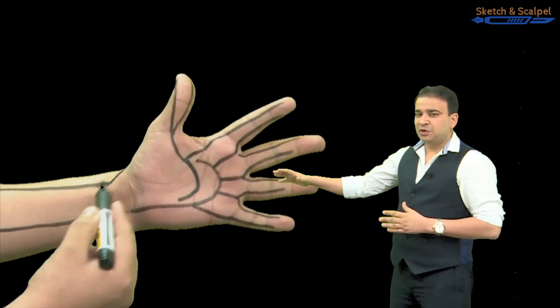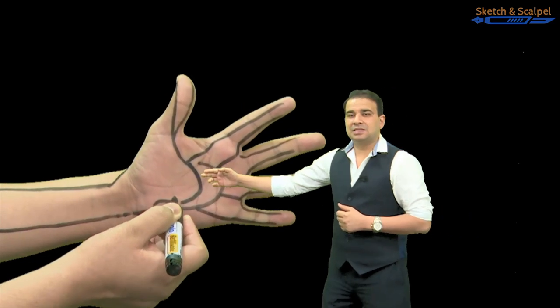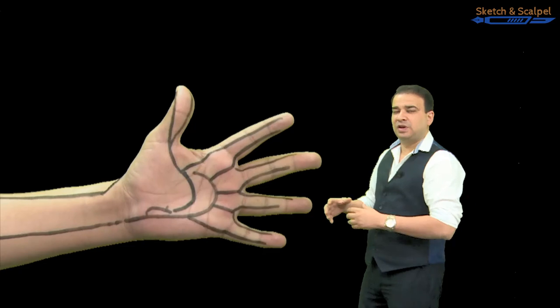Now how are these superficial and deep palmar arches completed? The deep palmar arch, as you can see, is completed by the branch of the ulnar artery. This is the deep branch of ulnar artery.